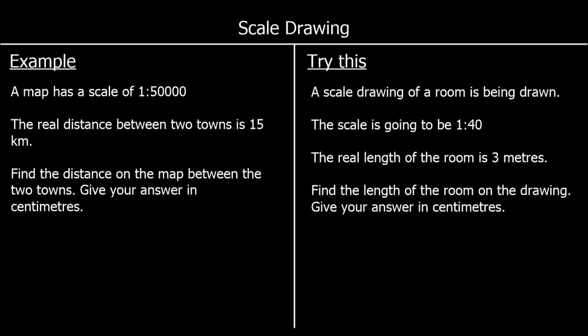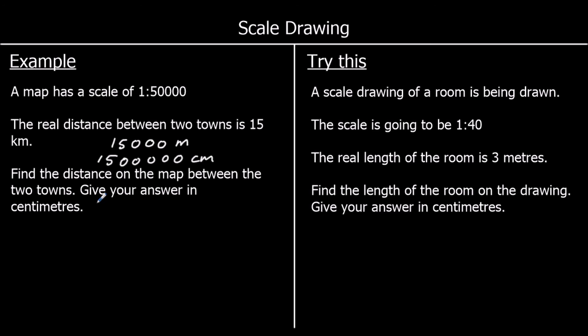And one more example. A map has a scale of 1 to 50,000. The real distance between two towns is 15 kilometers. Find the distance on the map in centimeters. This time we're going backwards — from real life to the map. We have 15 kilometers, so it'll be easier to change that into centimeters. 15 kilometers is 15,000 meters, and multiplying by 100 to convert meters to centimeters gives 1.5 million centimeters.